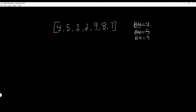Then we go to 8. Is 8 bigger than 9? No, it's not. Is 7 bigger than 9? No, it's not. So we have iterated through every single item in our list. Now what we do is we just return biggest number, and that'll be the biggest number in our list.